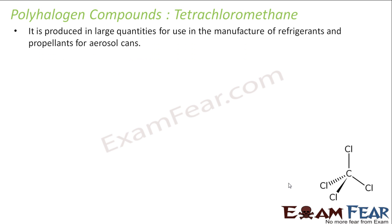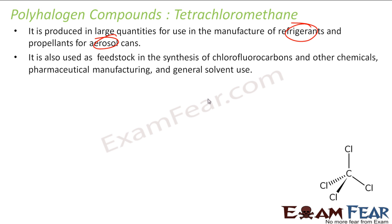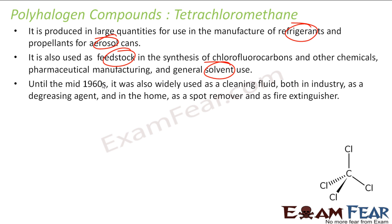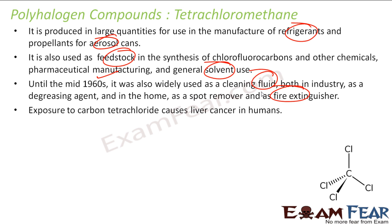Next is tetrachloromethane, with the formula CCl4. It is used for manufacturing refrigerants and aerosol cans. It is used as a feedstock and as a solvent. Until the 1960s, it was used for dry cleaning, but now it is no longer used for that. It is also used as a fire extinguisher.